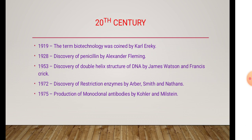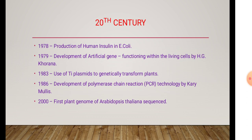In 1975, the production of monoclonal antibodies by Kohler and Milstein. In 1970, the production of human insulin — the insulin produced from E. coli.